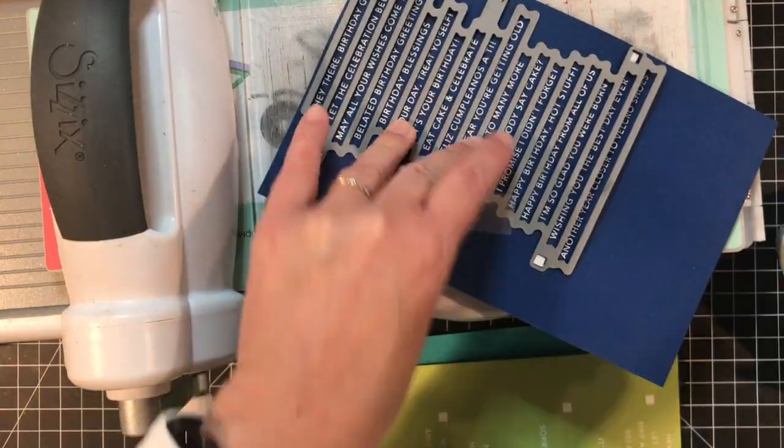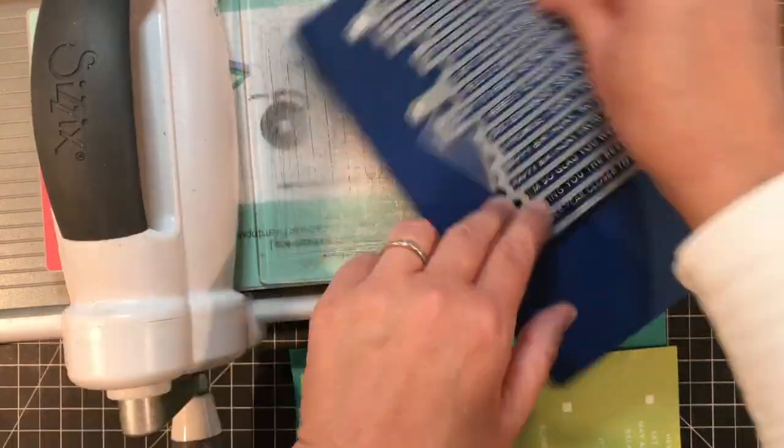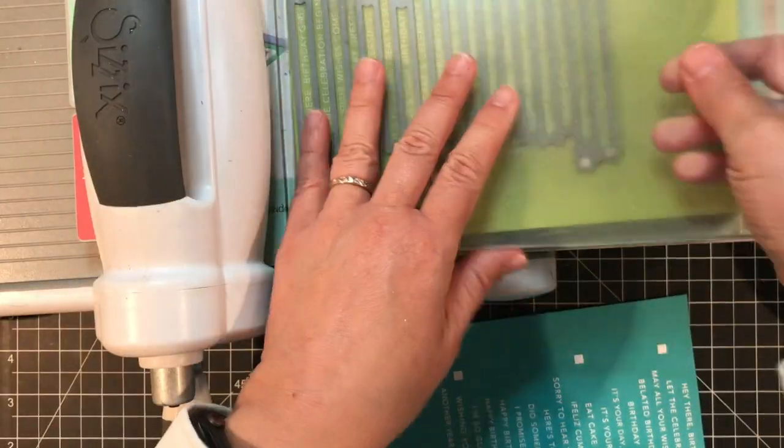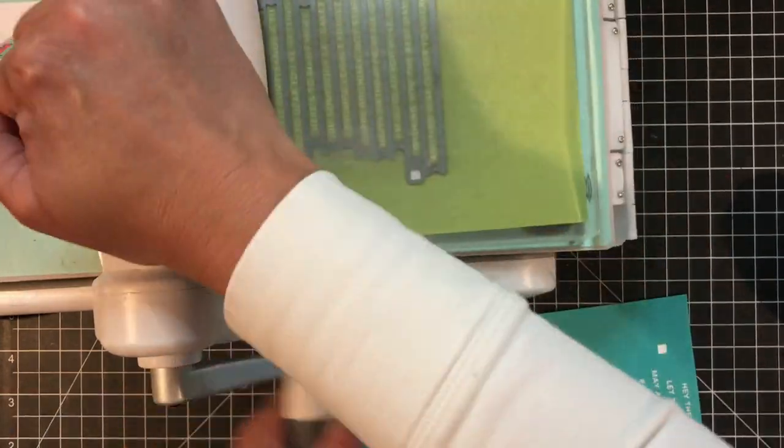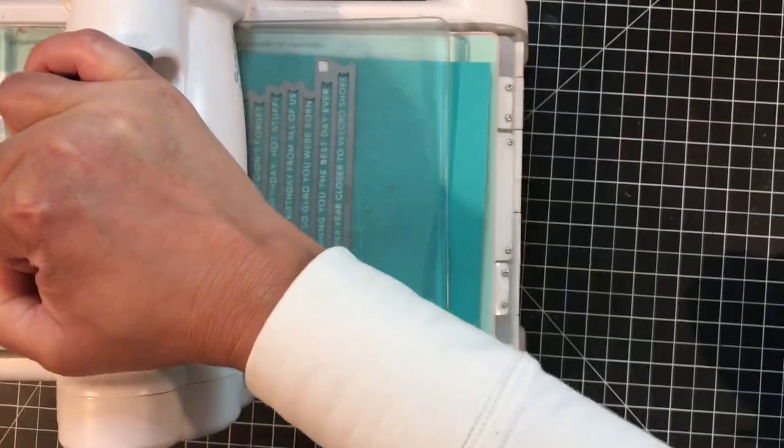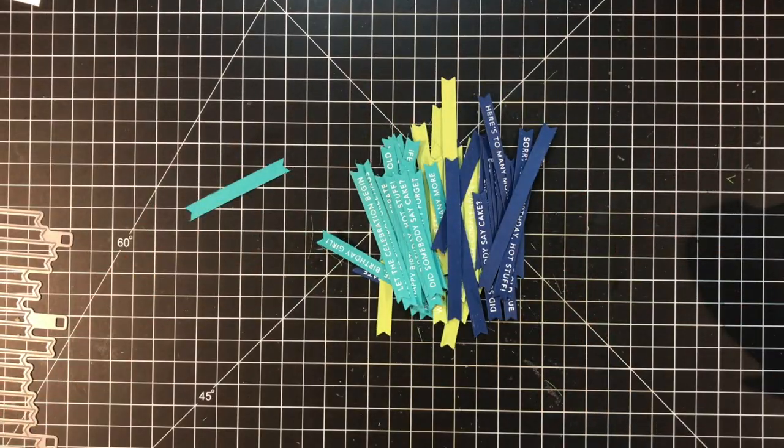Next I'll cut out all of these sentiments using the coordinating simple strips die. This die will cut out all of the sentiments on each cardstock piece with one pass through the die cut machine. I'll line the die up with the square alignment guides on the stamped image and I'll send it right through my machine to cut them out.